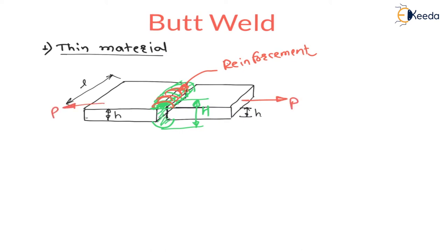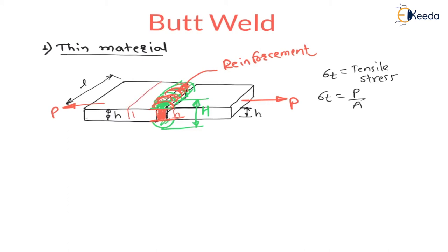Now if a load is applied perpendicular to the plate — that is, perpendicular to the welding — there will be a tensile stress in the plate. This tensile stress σt is calculated as load divided by area. We are not considering the excess reinforcement material; we consider only the thickness of the plate, which is h. Therefore the area is h into l, and σt equals the applied force divided by h into l.